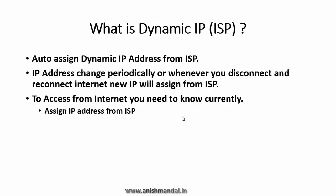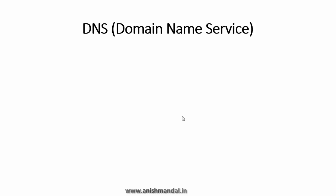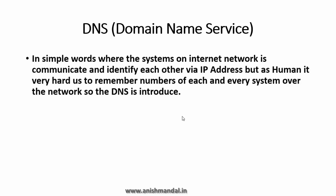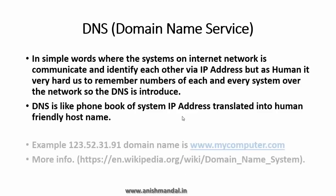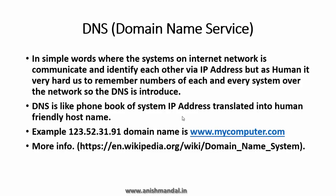The alternate solution is called DNS — Domain Name Service. In simple words, systems on the internet communicate and identify each other via IP address, but as a human it is very hard to remember numbers for every system on the network. That is why DNS was introduced. DNS is like a phone book that translates system IP addresses into human-friendly hostnames. For example, the IP address 123.52.31.91 can have a domain name like www.mycomputer.com, accessible using the DNS.